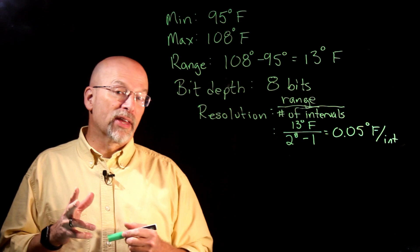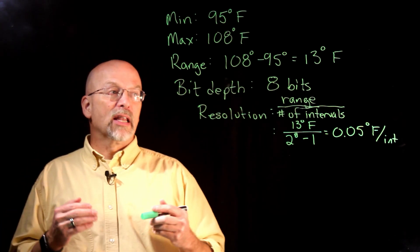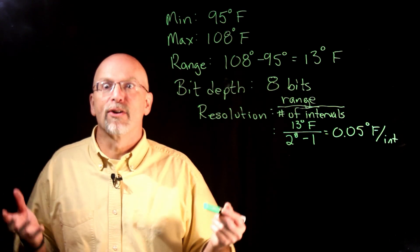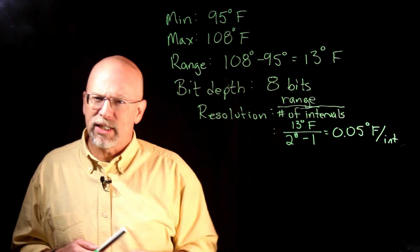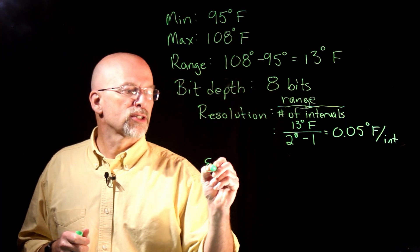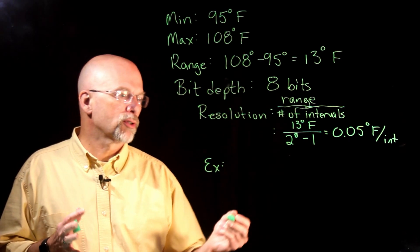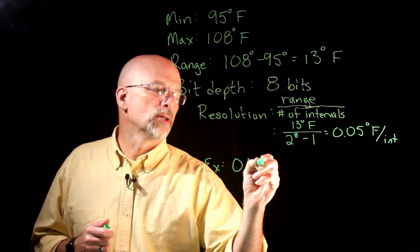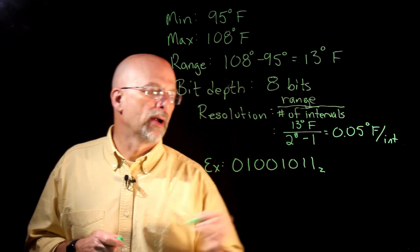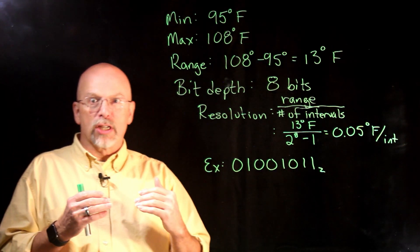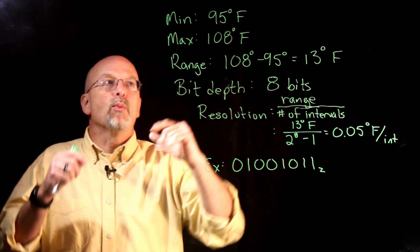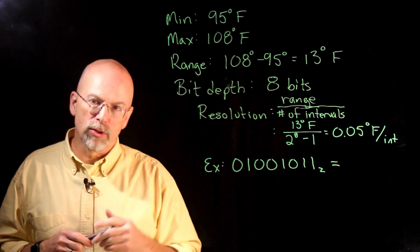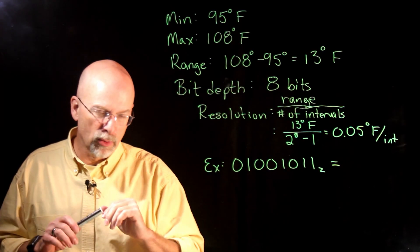The second thing I want to do is to be able to come up with an expression that will allow us to make this conversion. I get from the analog to digital converter some sort of a pattern of ones and zeros that represents the temperature. What temperature is it that we're actually looking at? So as an example, let's say the temperature that's coming back from our analog to digital converter is 01001011.